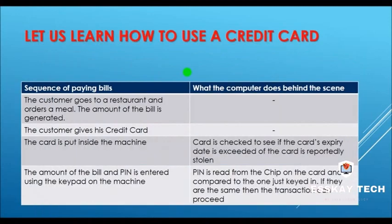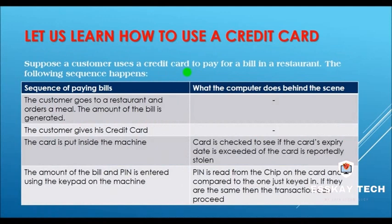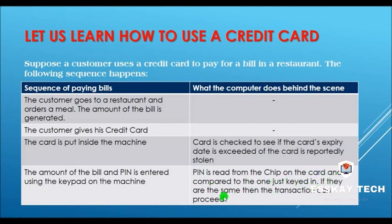Now let us learn how a credit card works. Suppose a customer uses a credit card to pay a bill at a restaurant. First, the customer gives the card. Second, the card is put inside the machine by the operator. Behind the scenes, the computer checks if the card's expiry date has passed or if the card has been reported stolen. Then the bill amount and PIN are entered using the keypad.